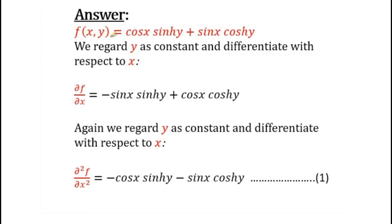As f(x, y) = cos(x)sinh(y) + sin(x)cosh(y), we regard y as constant. If y is constant then sinh(y) is constant and cosh(y) is constant, and we differentiate with respect to x. So, partial f by partial x is equal to: derivative of cos(x) is minus sin(x), and sinh(y) remains as it is; plus derivative of sin(x) is cos(x), and cosh(y) remains as it is.